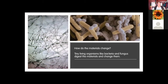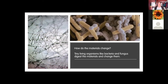Fungi grow in long microscopic threads through soil and decomposing organic matter, sometimes producing fruiting bodies — mushrooms — at the surface. Bacteria are great at eating soft stuff like fruit scraps, while fungi excel at breaking down tough materials like wood and straw. These are the main workers in our compost bin.